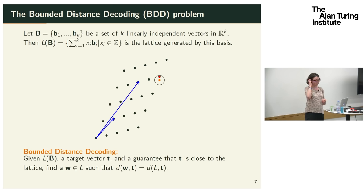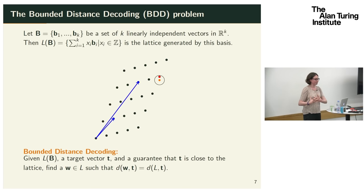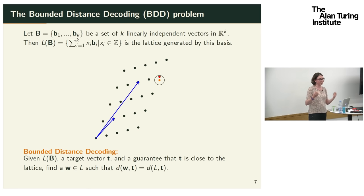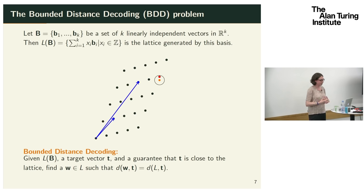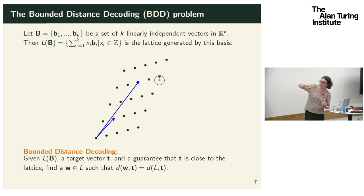Learning with errors falls into lattice-based crypto. A lattice is a discrete subgroup of R^k, and we interact with it via a basis — a set of linearly independent vectors whose integer combinations form the lattice. The bounded distance decoding (BDD) problem is: given a lattice and a target vector t that is known to be close to some lattice vector, find the closest lattice vector to t.